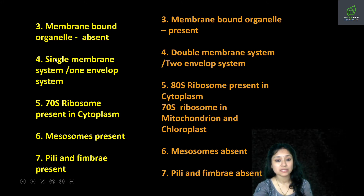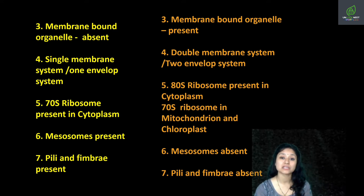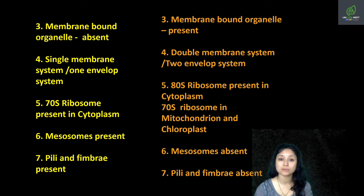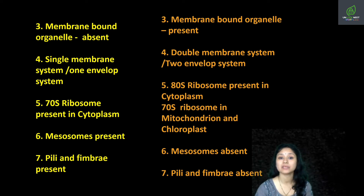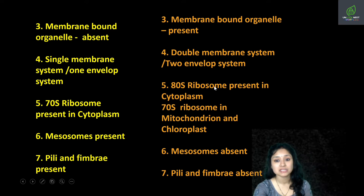Prokaryotic cells have a single membrane system or one envelope system — meaning there is one membrane outside the cytoplasm, but no membrane present inside the cytoplasm. That is why we consider prokaryotes to be a one-envelope system. Whereas in eukaryotes, there is a membrane outside the cytoplasm — the plasma membrane — and also membranes inside the cytoplasm — the membrane-bound organelles. That is why eukaryotic cells are considered to have a double membrane system or two-envelope system.